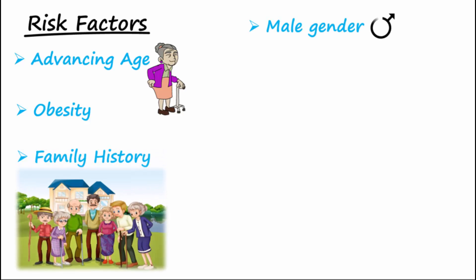Risk factors for developing multiple myeloma include advancing age, the usual onset is around 60, obesity increases the risk, as does family history, male gender, and African descent.